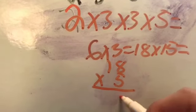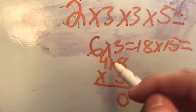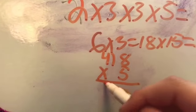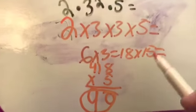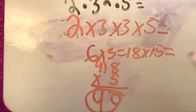8 times 5 is 40. 5 times 1 is 5. Plus 4 is 9. So, the answer is 90. And I hope you guys got this right. If you didn't, that's okay. Just keep trying.